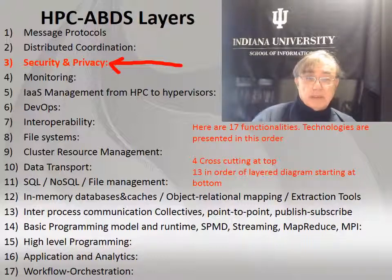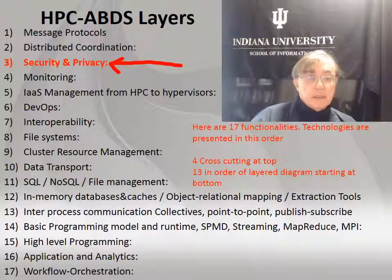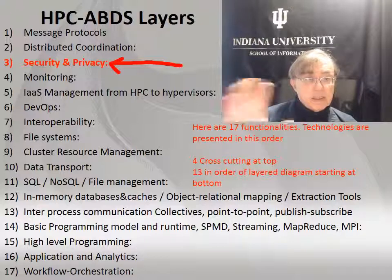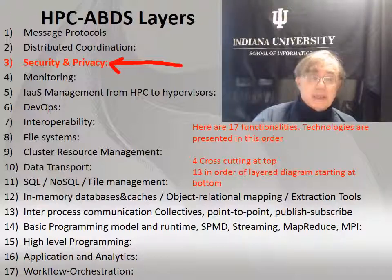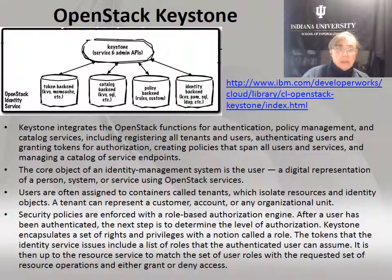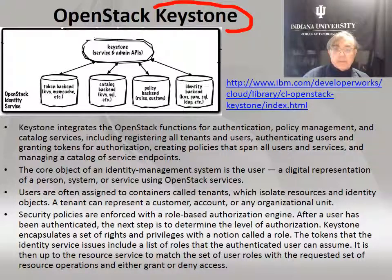Now we have the third layer. This is a huge layer and our discussion does not do it justice. In general, in these cross-cutting layers we've selected rather few choices of technologies. Here we just have a few security and privacy technologies that are particularly relevant to the other 13 non-cross-cutting layers.